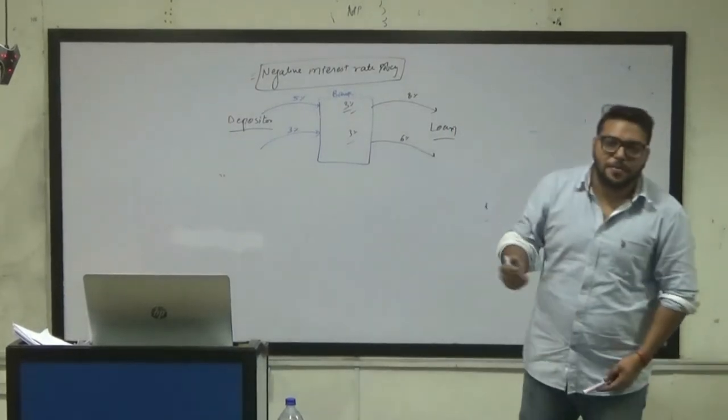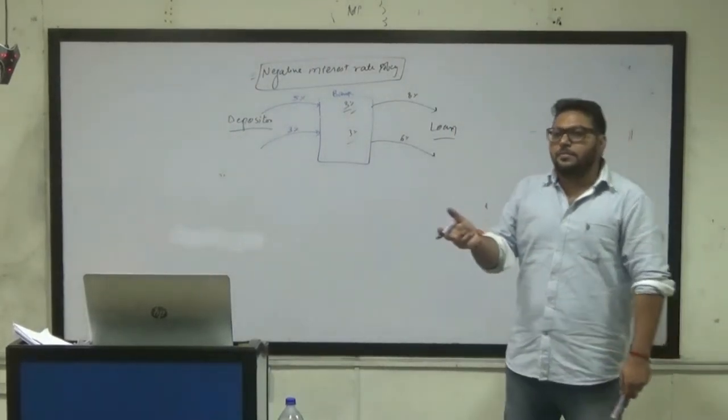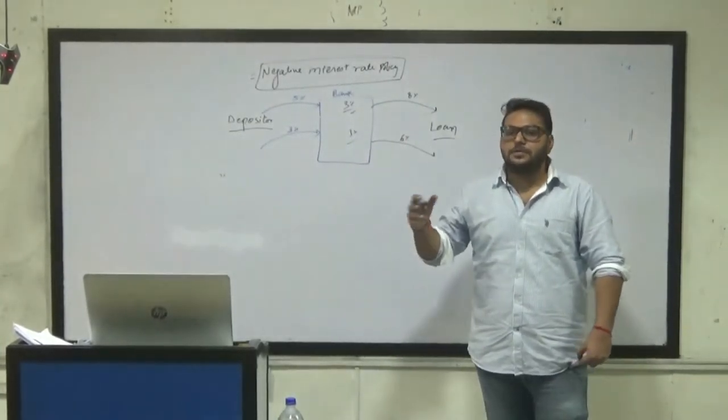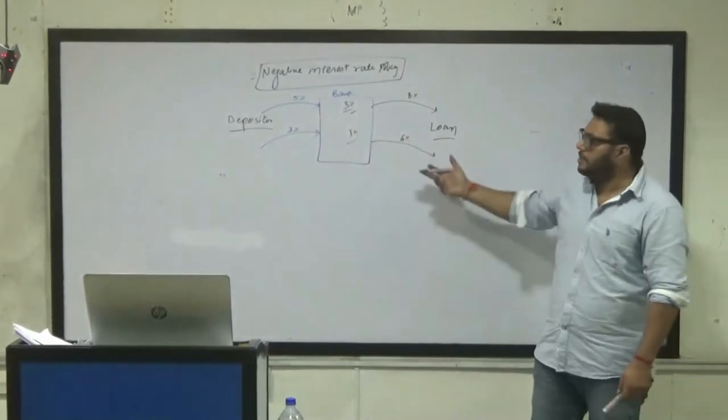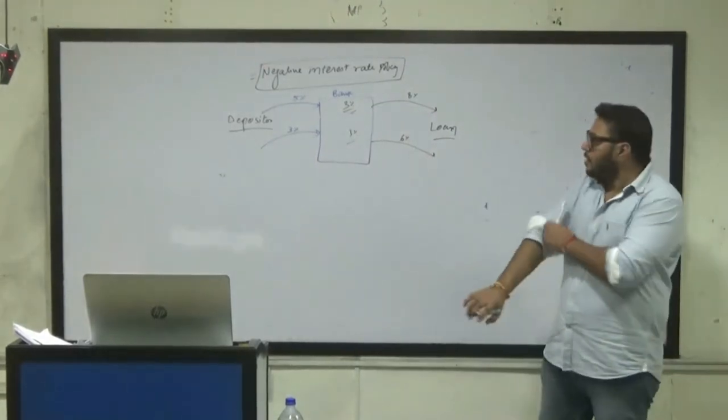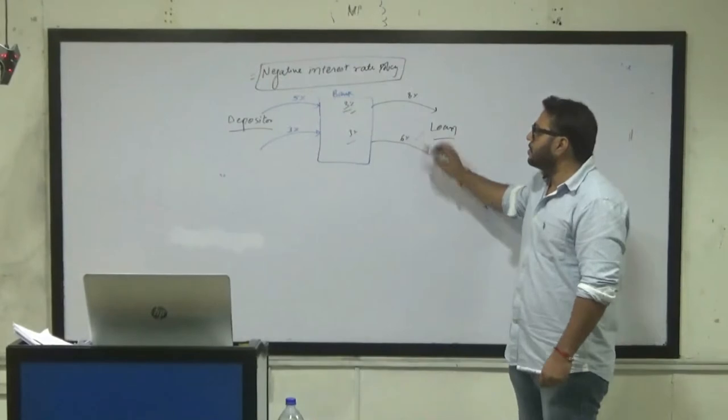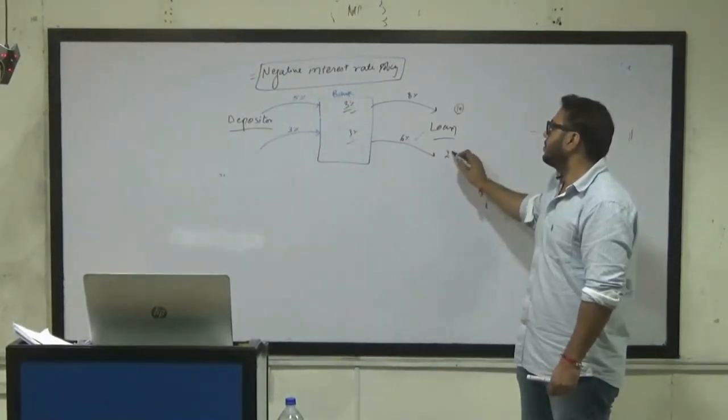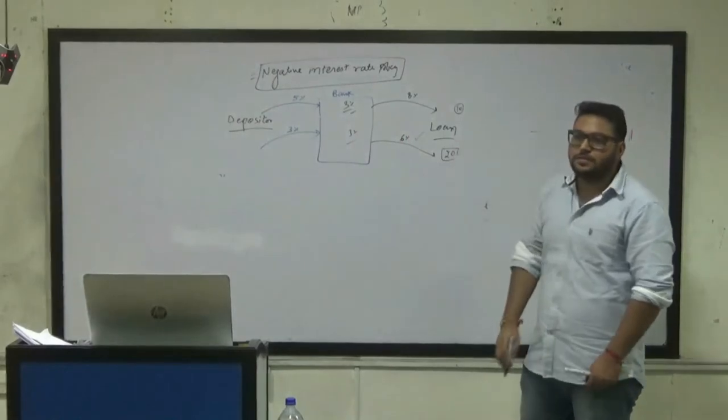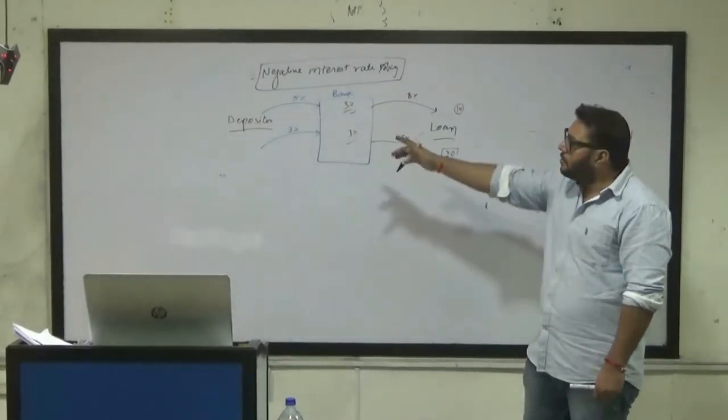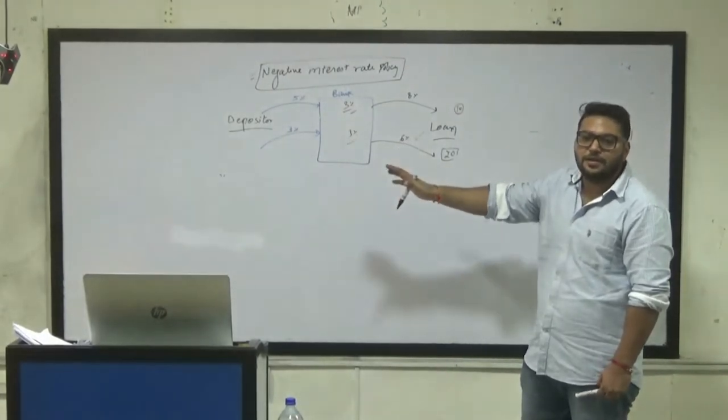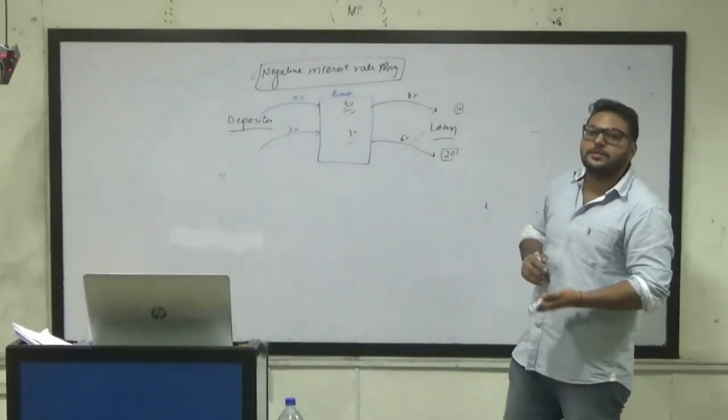Many times the government has said, like in public sector lending, PSM loans will be at 6%. So if there are 10% or 20% loans, then there will also be less. Depositors will decrease. But the decrease is not enough.